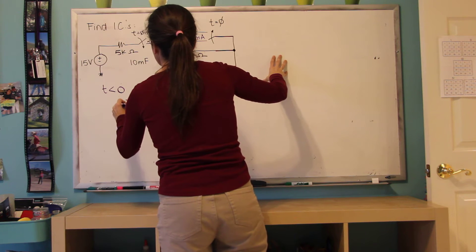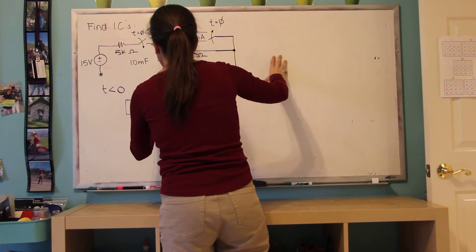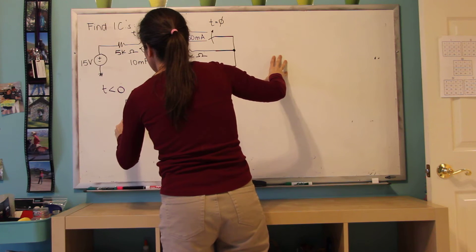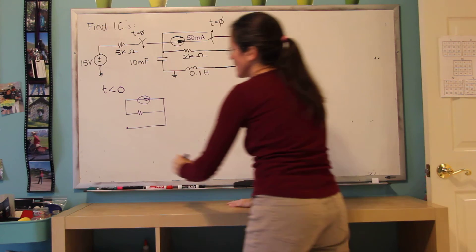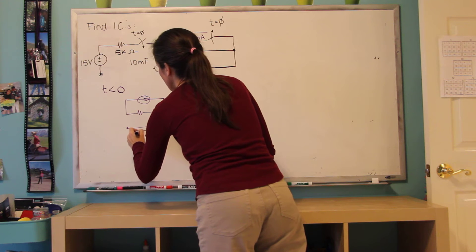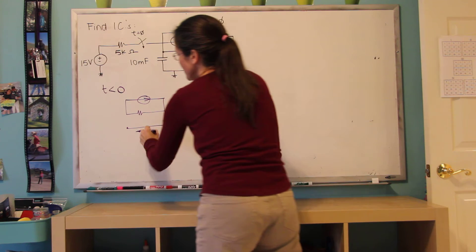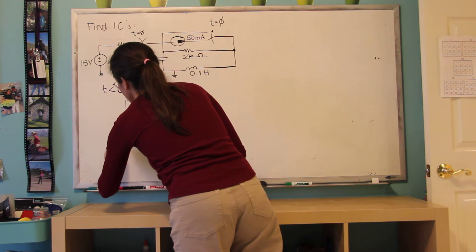I have 50 milliamps, 2k. And here the inductor is shorted. However, the capacitor is open. So the current through the inductor is zero.